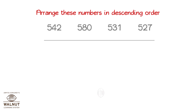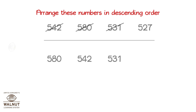Arrange these numbers in descending order. You pick the biggest number and place it first. Then the next biggest and then the next one. Then place the last one. So, we get the numbers in descending order.